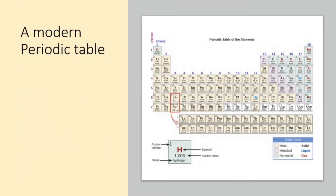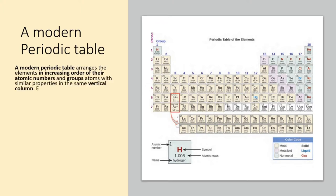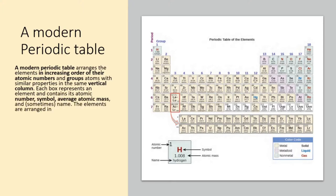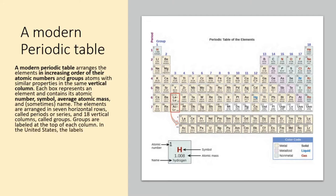A modern periodic table arranges the elements in increasing order of their atomic numbers and groups atoms with similar properties in the same vertical column. Each box represents an element and contains its atomic number, symbol, average atomic mass, and sometimes name. The elements are arranged in seven horizontal rows, called periods or series, and 18 vertical columns, called groups.